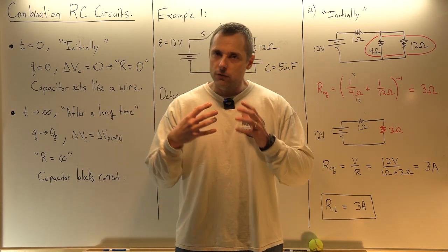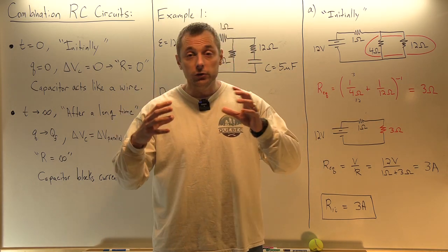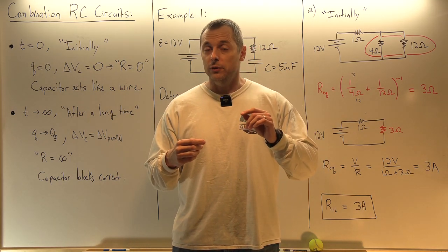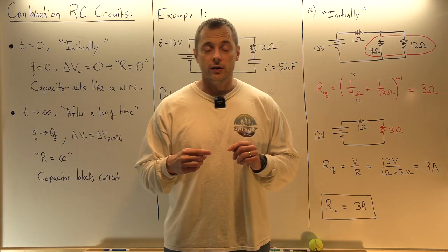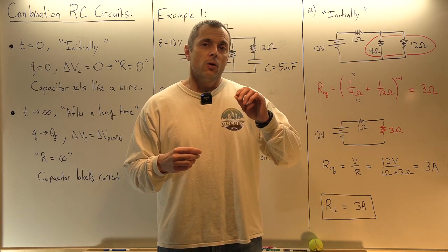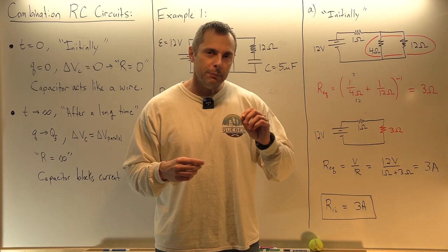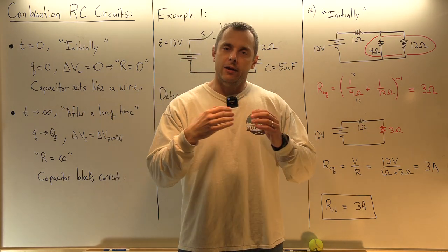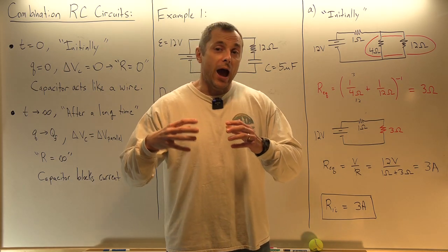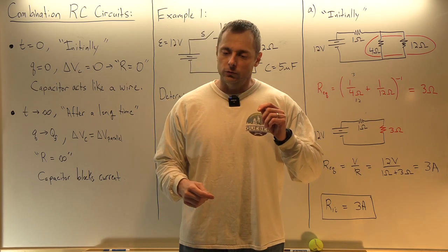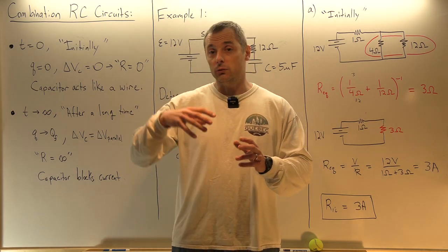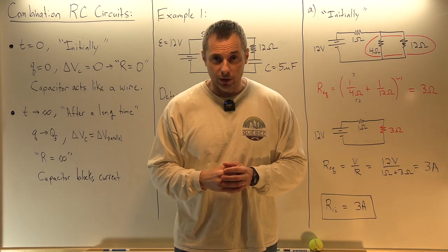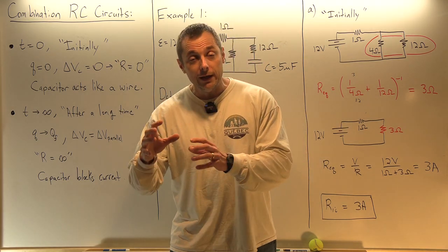What we're going to do today is move on to circuits that are more complicated, where there are multiple loops — combination circuits. Instead of analyzing them the way we did in the first two videos about resistor-capacitor circuits, we're just going to look at what's happening in the circuit the moment the switch makes contact, then skip the in-between and figure out what's happening after a long time. Writing differential equations for these combination circuits is too difficult for this course, so it's not part of the curriculum.